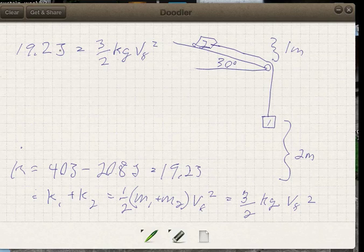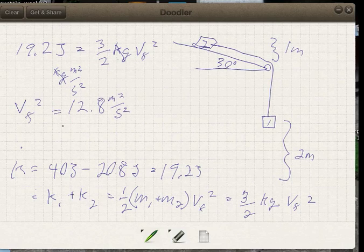Very important to recognize units. A joule is a newton meter, or a kilogram meter squared per second squared. We like that we can cancel these kilograms, and we end up with then v final squared is then equal to 12.8 meters squared per second squared.